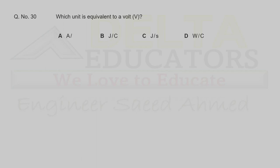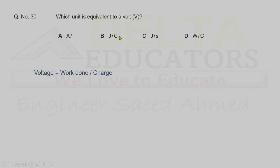Question 30. Which unit is equivalent to volt? Voltage is defined as work done per unit charge, so V = J/C (joules per coulomb). Correct option is B.